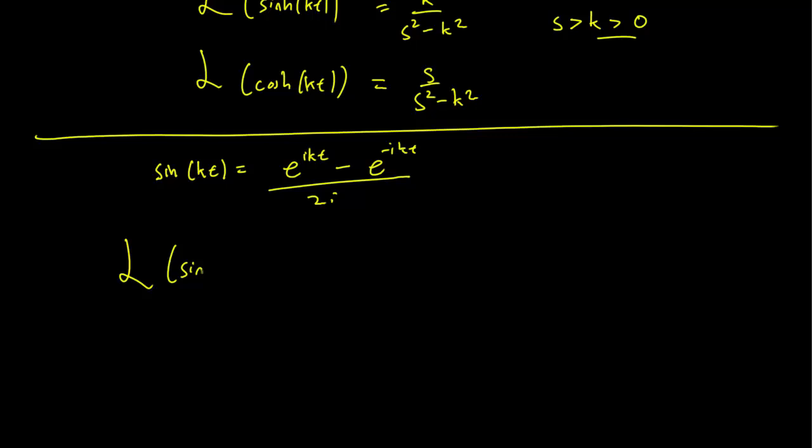Again, we exploit the linearity of the Laplace transform to get 1 over 2i, Laplace transform of e^(ikt), minus 1 over 2i, Laplace transform of e^(-ikt).